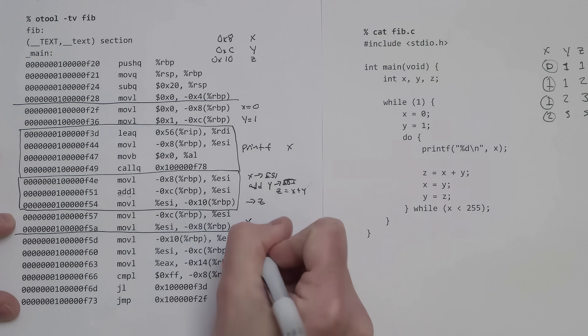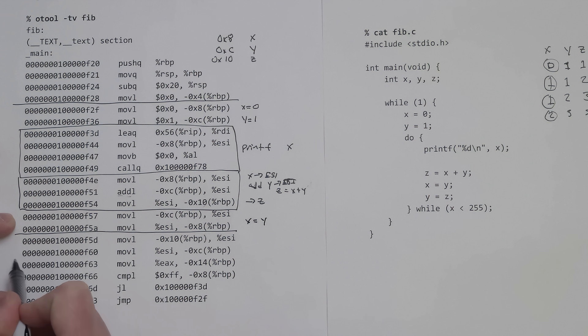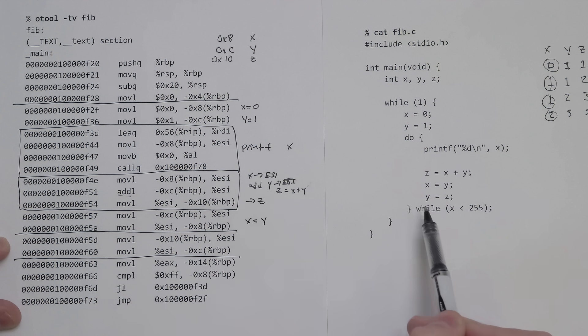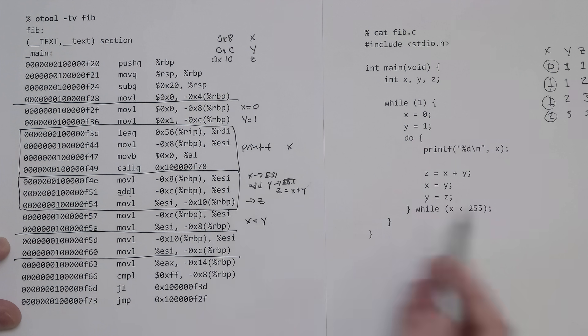The next two lines are basically the same thing, except now we're going from 0x10 into 0xc, going from z into y. Or the way we write it here is y equals z.